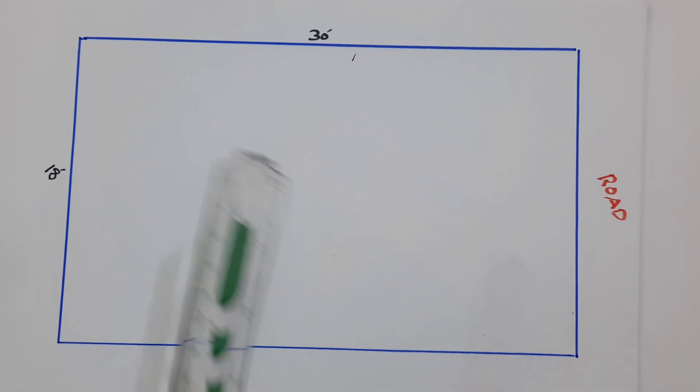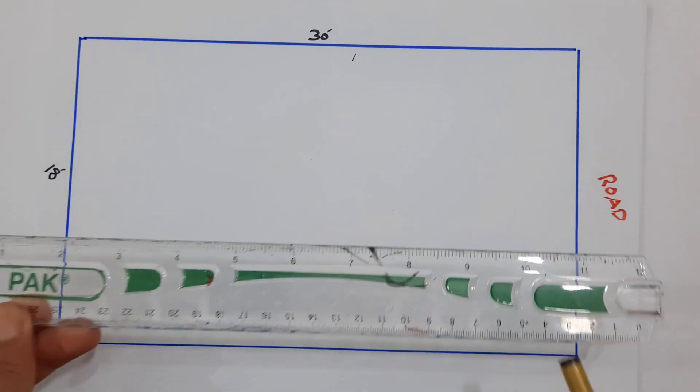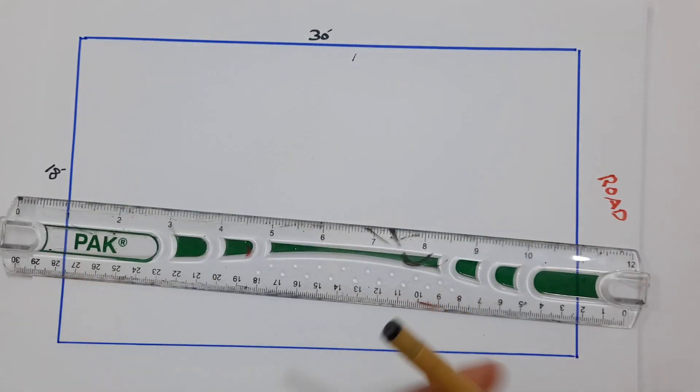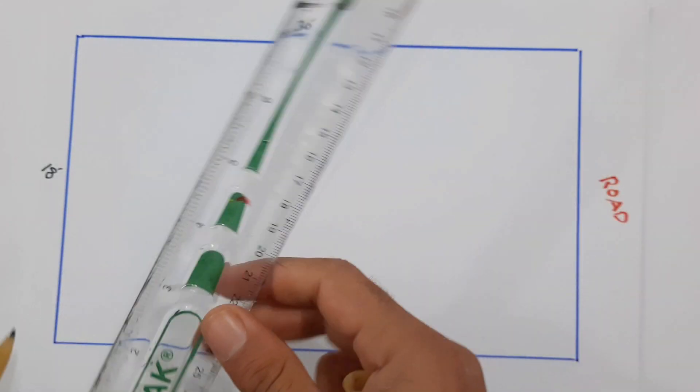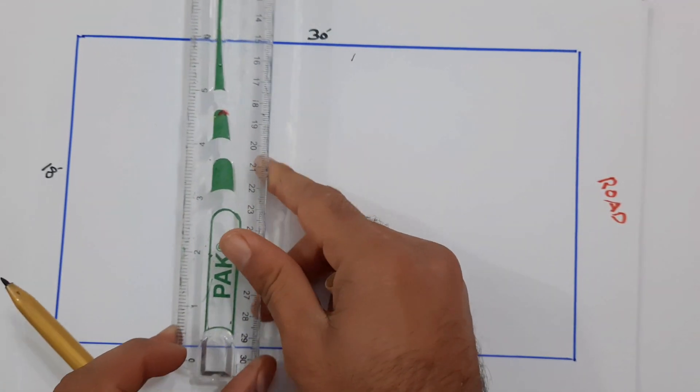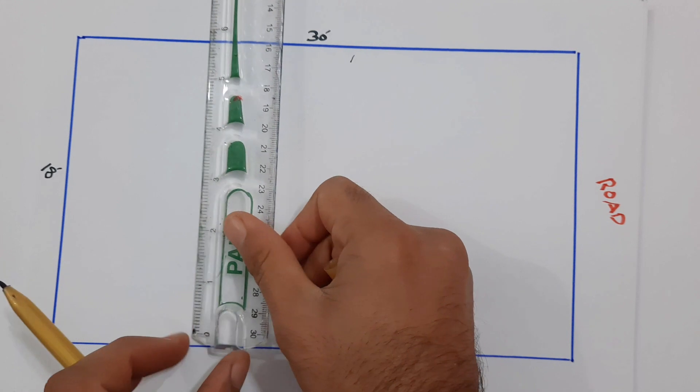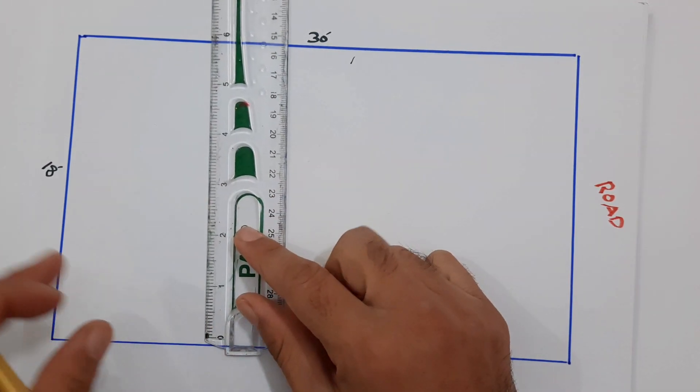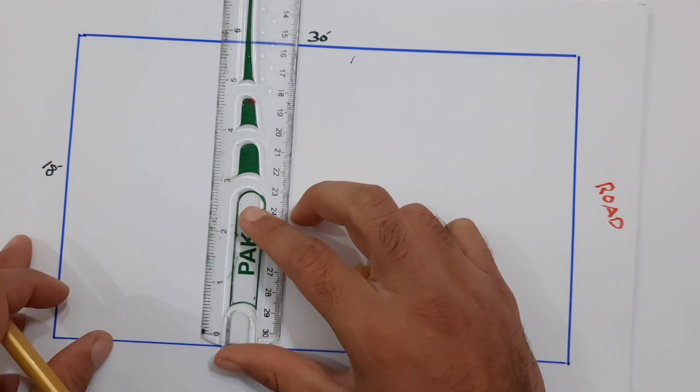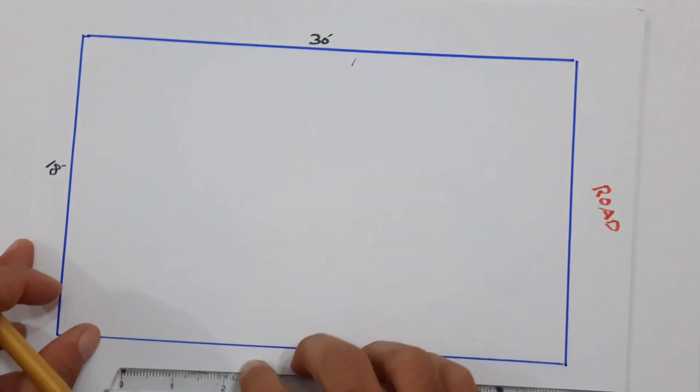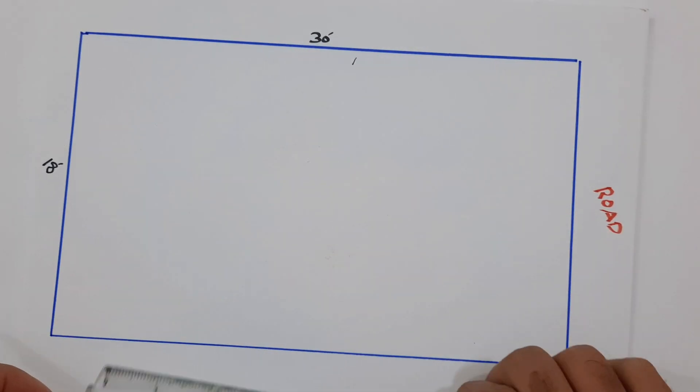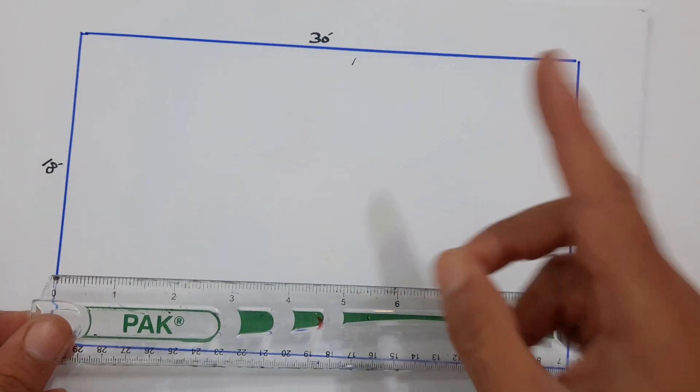So here guys I will make a bedroom which size will be 10 by 10 feet. So for 10 by 10 feet I will make 3.5 inch. Three point - sorry here, it should be, because this is a scale, so one inch is equal three feet.